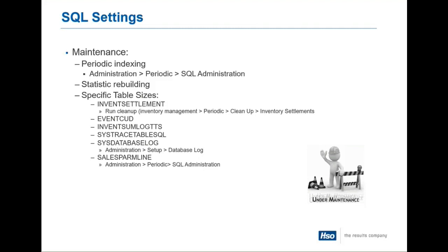What I have listed on the screen are some tables and sizes to take a look at — the invent settlement table, the event CUD table, some log tables. These are all temporary tables that get used at different times, and sometimes AX doesn't necessarily clean these out very well, so you may have to clean these out. In the maintenance part of this presentation, we dive in a little deeper on the periodics of cleaning out different tables, but these are just a quick list of things to do a quick check on to see what the size of those tables are. If you see a table with 500,000 or a million records and it's one of these tables, you might want to investigate that.